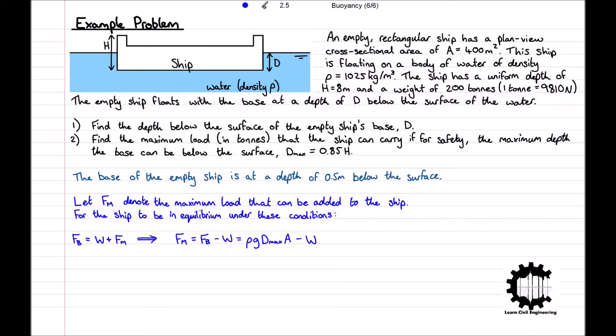Again, substituting our values provided in the question, Fm = (1025 × 9.81 × 0.85 × 8 × 400) - (200 × 9810). Therefore, Fm equals 25.39 × 10⁶ newtons, and to convert this back into tons, we divide by 9810 to get 2588 tons.